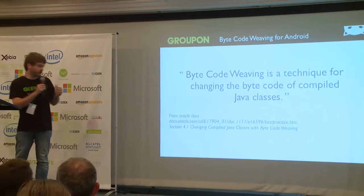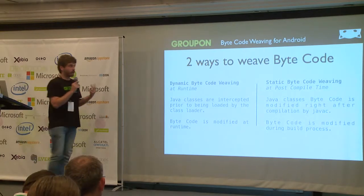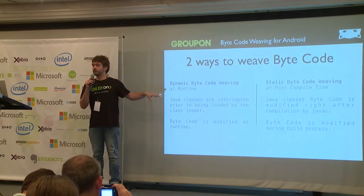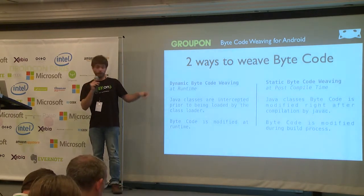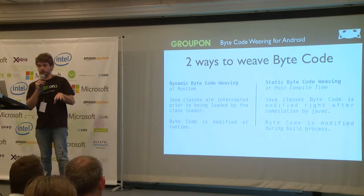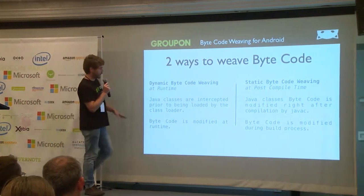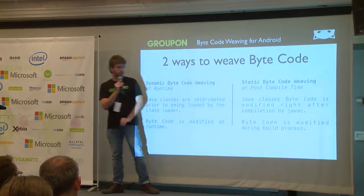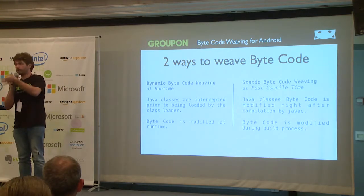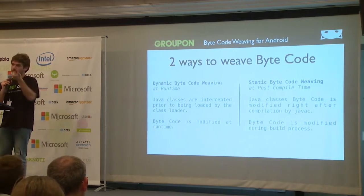There are two ways to weave bytecode on a JVM. The first is dynamic bytecode weaving — weaving bytecode at runtime. Java classes are intercepted prior to being loaded by the class loader, and while intercepted, the bytecode is changed. The second is static bytecode weaving, done at post-compilation time: once classes are compiled by the Java compiler, during the build process we can modify the bytecode.